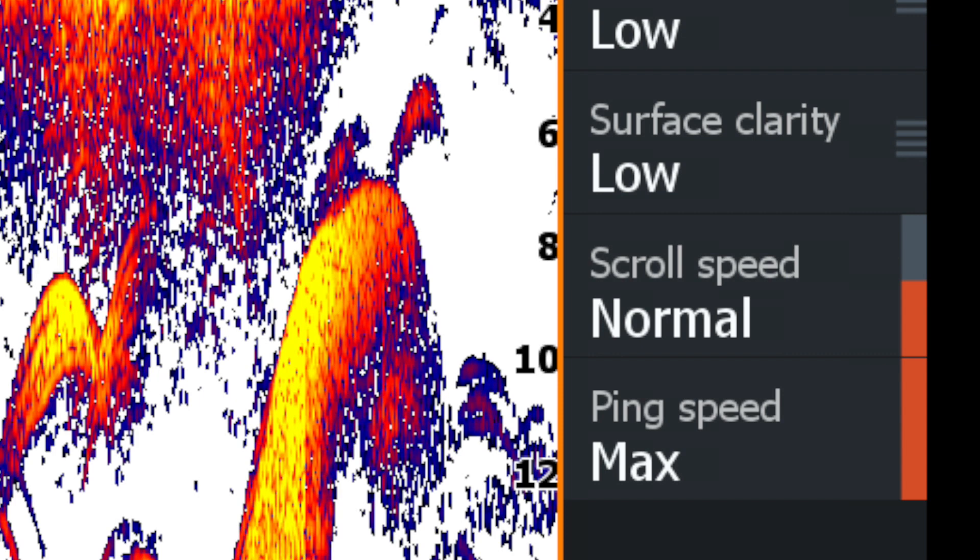One caveat though, as the depth increases, you do not want to have a high ping rate. As the depth increases, running high ping rate leads to interference. It's typically seen as vertical lines on your sonar. And what it is, the signal sent crashes with the return of the previous signal if the ping is set too high. The general rule of thumb is to set the ping speed to match the scroll speed. That's usually a safe configuration.